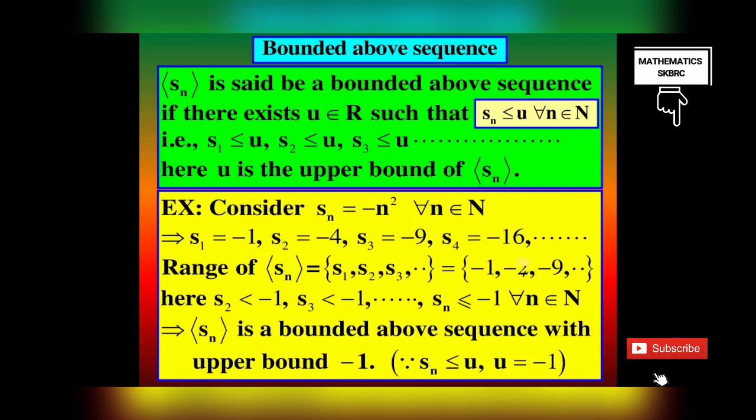Similarly, we define a bounded above sequence. A sequence SN is said to be a bounded above sequence if there exists a real number U belonging to R such that SN is less than or equal to U for all N belonging to N. Here U is the upper bound of sequence SN. Remember, every bounded above sequence has an upper bound.